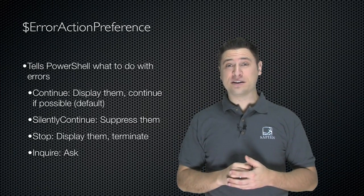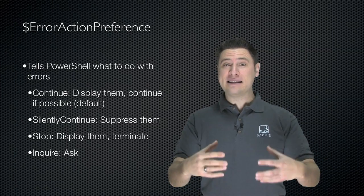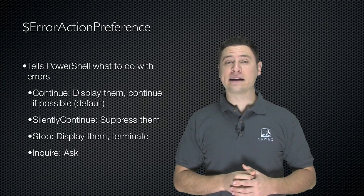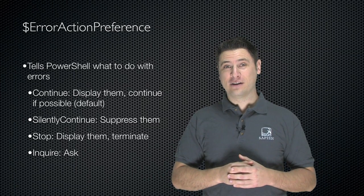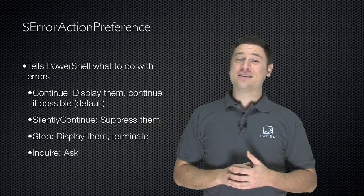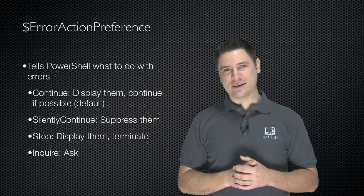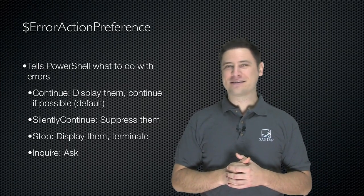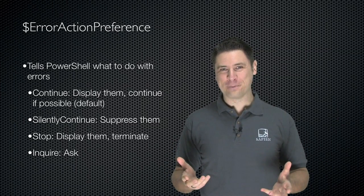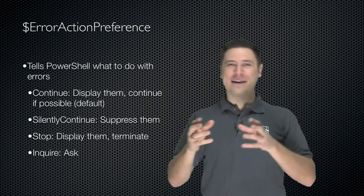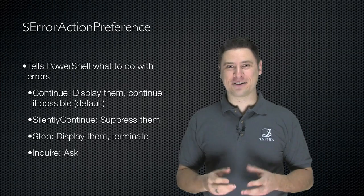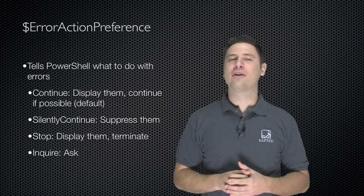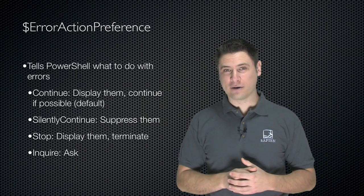Another choice is 'stop', which means display the error and stop — it basically turns the error into a terminating exception. The fourth option is 'inquire', which you're never really going to use. It tells PowerShell to ask what to do if an error happens. You don't want your script stopping every single time and asking whether to continue, silently continue, or stop. So you're usually going to pick one of the first three.